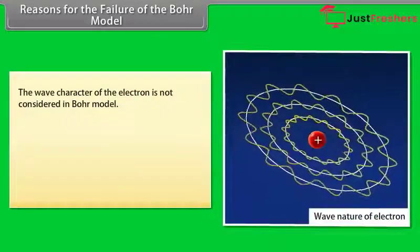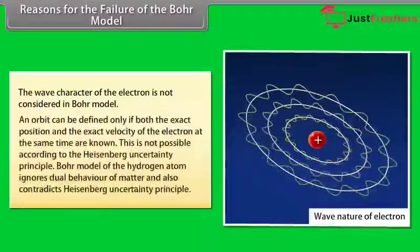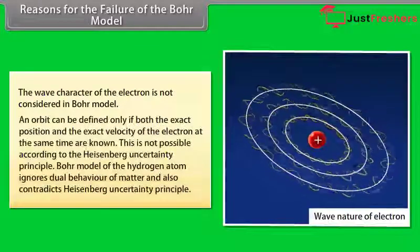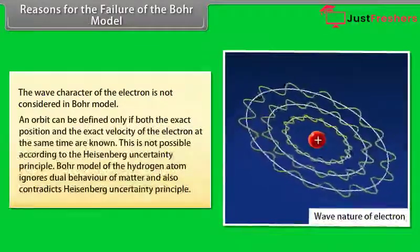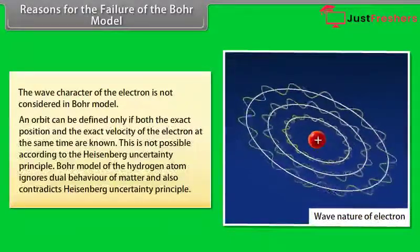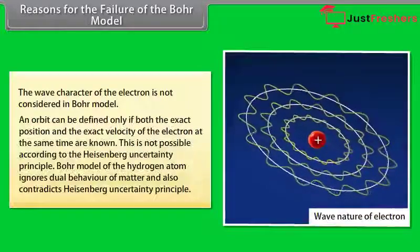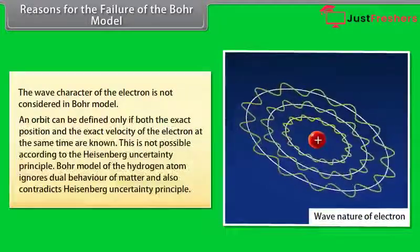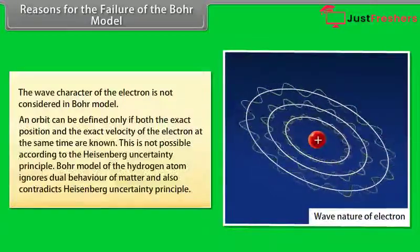Reasons for the failure of the Bohr model: The wave character of the electron is not considered in the Bohr model, and an orbit can be defined only if both the exact position and the exact velocity of the electron are known simultaneously. This is not possible according to the Heisenberg Uncertainty Principle. The Bohr model of the hydrogen atom ignores the dual behavior of matter and also contradicts the Heisenberg Uncertainty Principle.